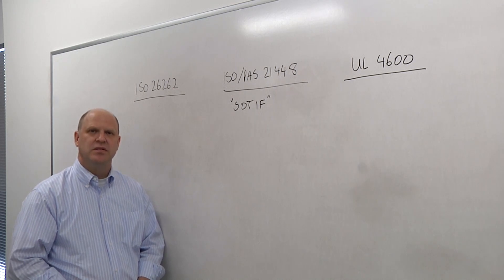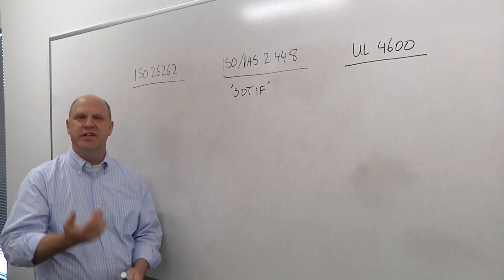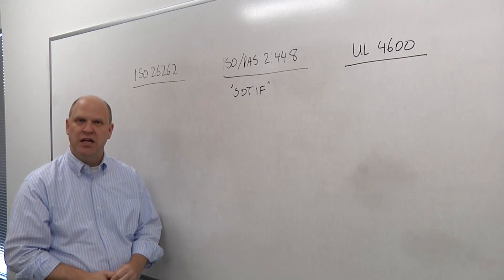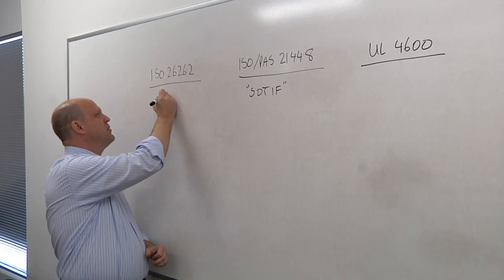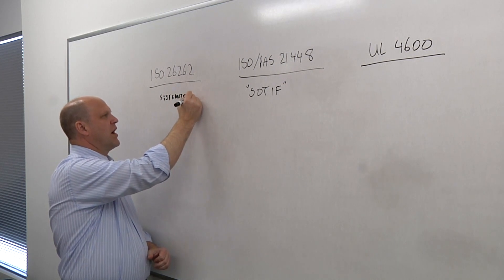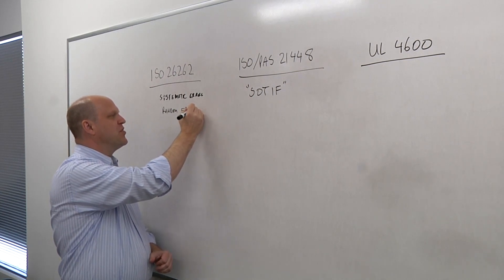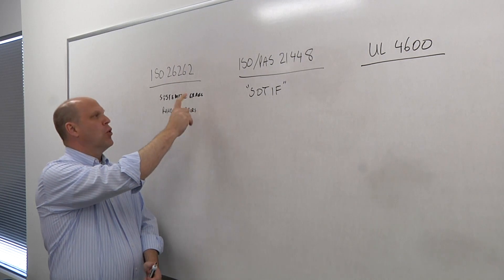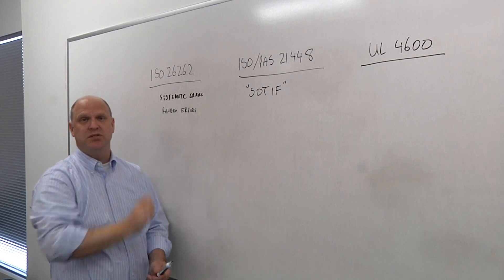SOTIF and UL4600 are meant to cover different things — more on the process and the thought process of safety. ISO 26262 is derived from the IEC 61508 specification, which covers all electric and electronic systems. What we're dealing with here is systematic errors and random errors — things like bit flips, errors in the specification, or errors that occurred in manufacturing. These are the traditional functional safety concerns that ISO 26262 covers.